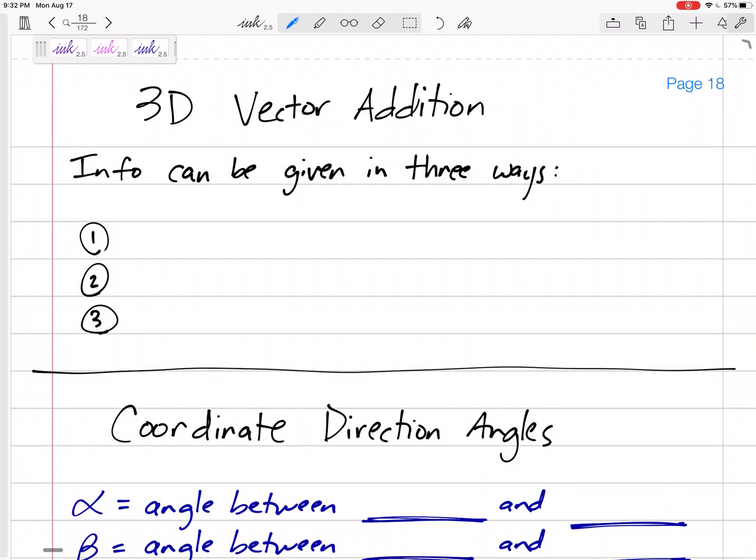All right, but 2D vectors was too easy, right? Y'all are pros at that, that was a breeze. This might be a little bit more hard. It's a little less comfortable for you is adding 3-dimensional vectors.